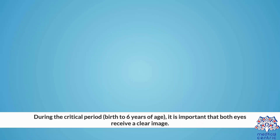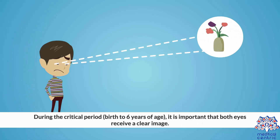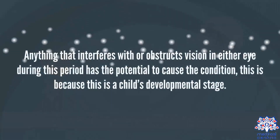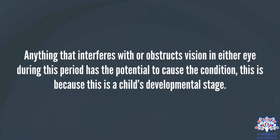Causes: During the critical period — birth to 6 years of age — it is important that both eyes receive a clear image. Anything that interferes with or obstructs vision in either eye during this period has the potential to cause the condition, because this is a child's developmental stage.